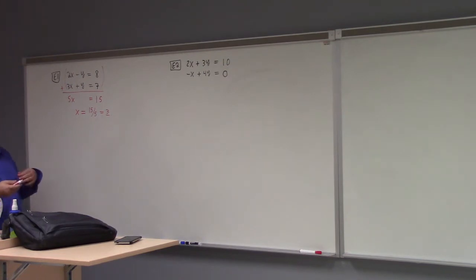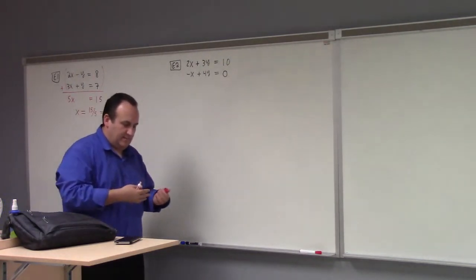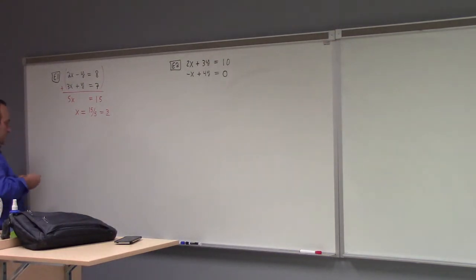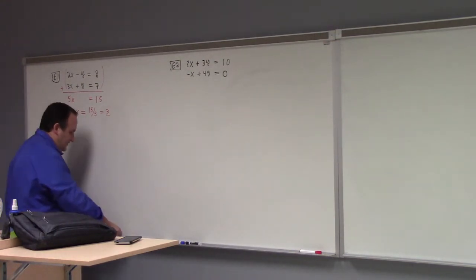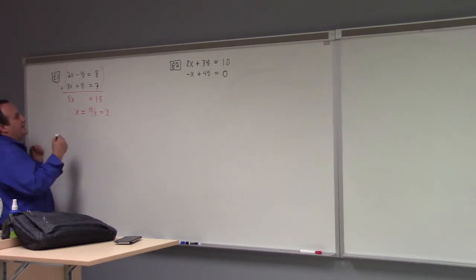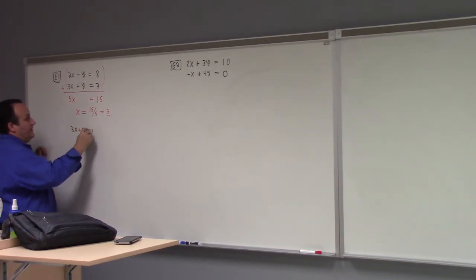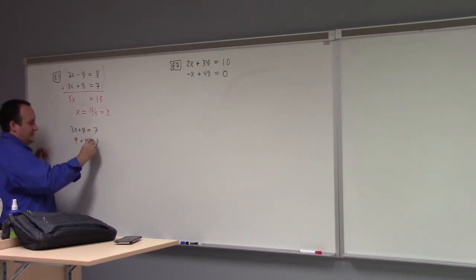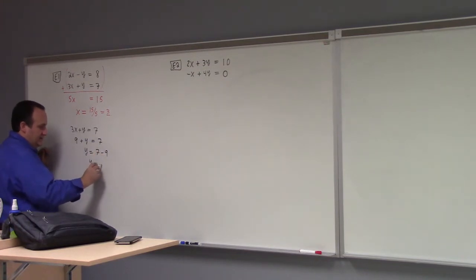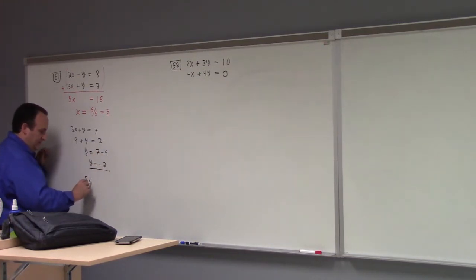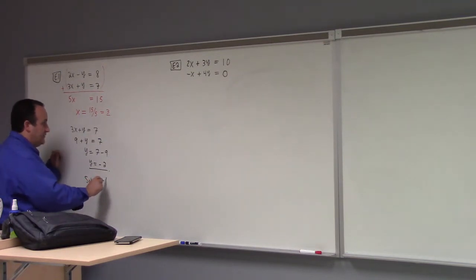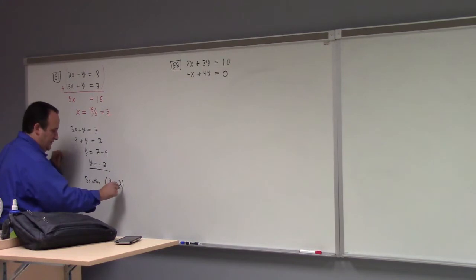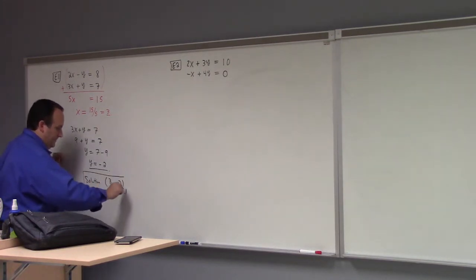That's half of it. Now the solution should be a pair of numbers that when we plug it in, it makes both equations true. So I need to find y. How about 3x plus y equals to 7? But x is equal to 3, so this gives me 9 plus y equals to 7, which tells me y is 7 minus 9 — y is equal to minus 2. So my solution is the pair 3, minus 2.